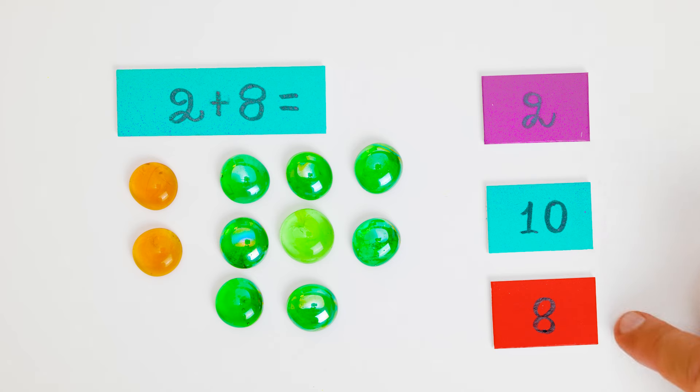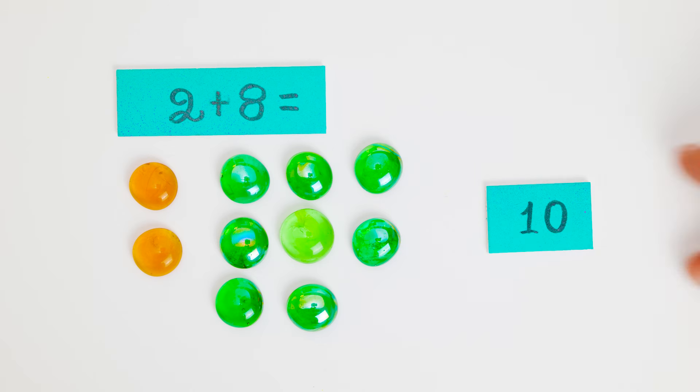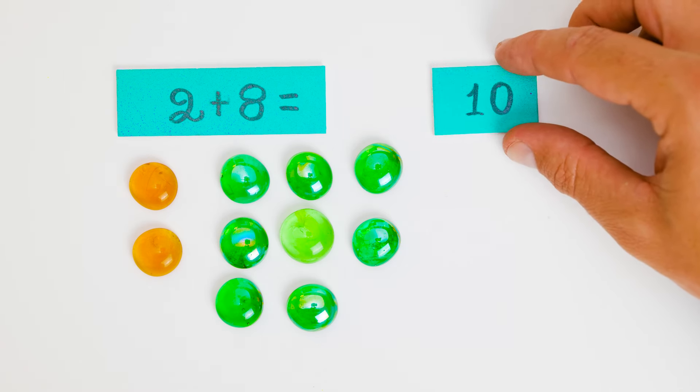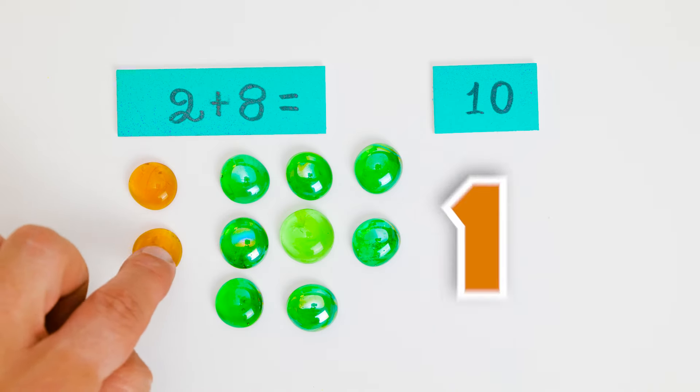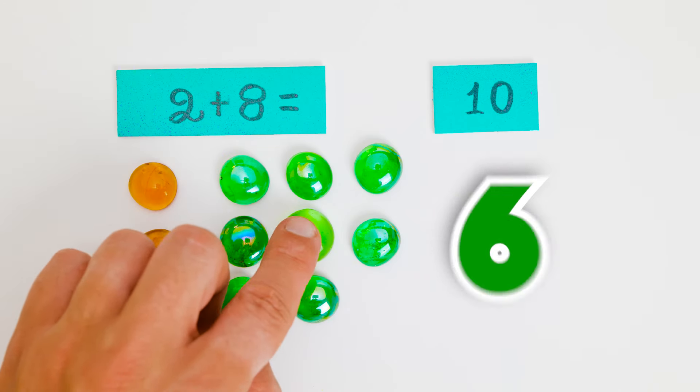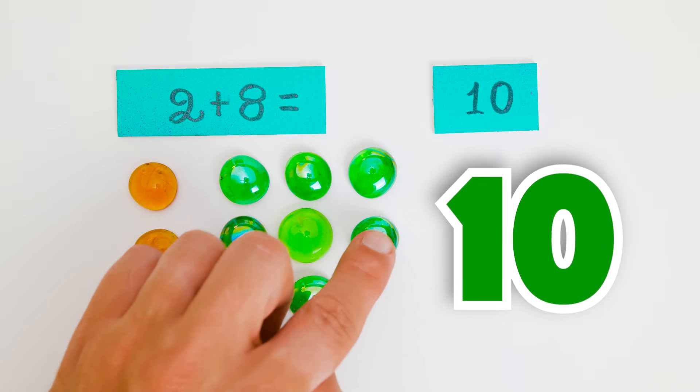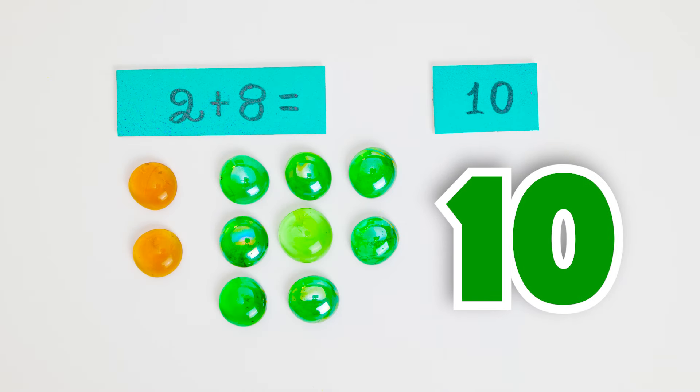What's the answer to two plus eight? Is it two, ten, or eight? Aha! It must be ten. Two plus eight is ten. One, two, three, four, five, six, seven, eight, nine, ten. We're right. Yay!